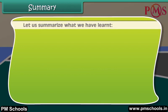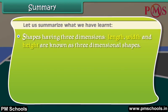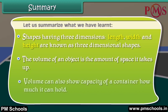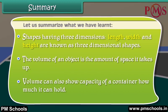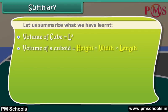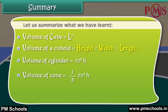Let us summarize what we have learned. Shapes having three dimensions — length, width, and height — are known as three-dimensional shapes. The volume of an object is the amount of space it takes up. Volume can also show the capacity of a container, how much it can hold. Volume of cube = L cubed. Volume of cuboid = height times width times length. Volume of cylinder = pi R squared H. Volume of cone = one-third pi R squared H.